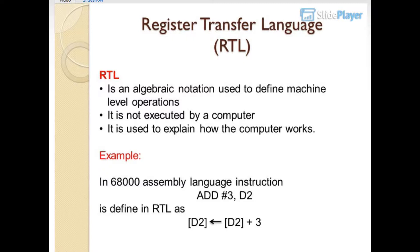Example: In 68000 assembly language instruction ADD #3, D2 is defined in RTL as D2 gets D2 plus 3.